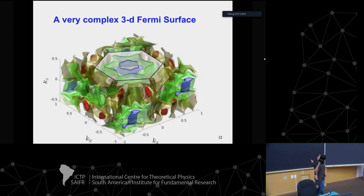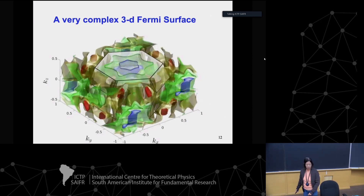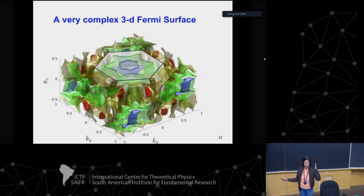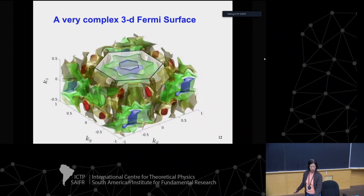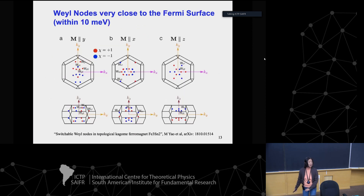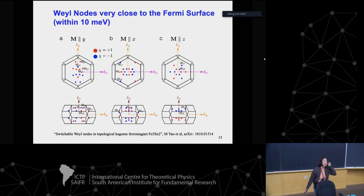This system has a very complex band structure. Our DFT collaborators couldn't even tell me the density of states at the Fermi level for out-of-plane versus in-plane polarization because the open Fermi surfaces make it impossible to integrate. They searched for Weyl nodes and found many of them close to the Fermi surface within 10 meV. In many other materials, Weyl nodes reside far from the Fermi level and have no meaningful impact on electronic transport.